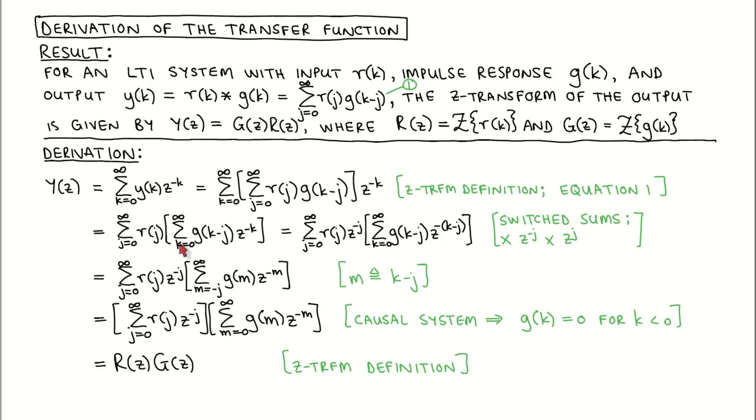We want to write the sums as Z-transforms, so we multiply with Z to the power minus J and Z to the power J, and we change the summation variable of the inner sum to be M equal to K minus J.